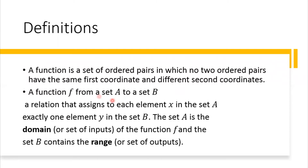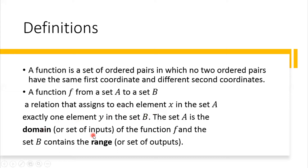A function f from a set A to a set B is a relation that assigns to each element x in set A exactly one element y in set B. Meaning, it's a correspondence that assigns every element x — because x is a dummy variable, x could be any real number or any object — every element in set A has exactly one element y in set B. It is considered a function if every element in set A has exactly one element in set B. We call set A the domain or set of inputs, and set B the range or set of outputs.